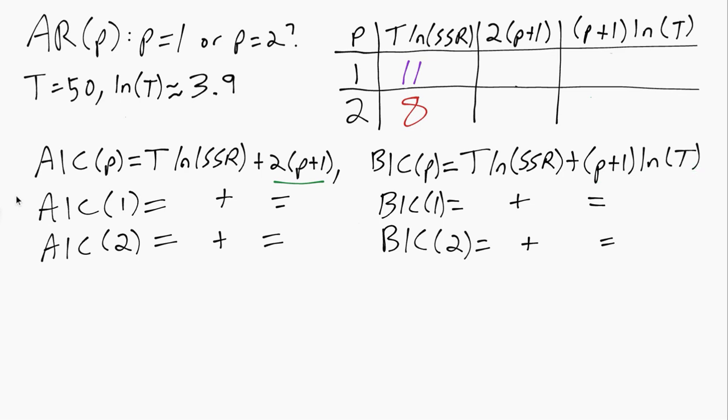So let's see how these numbers work out. So first for the AIC penalty, if P equals 1 then P plus 1 is 2, so the penalty is 2 times 2 or 4.